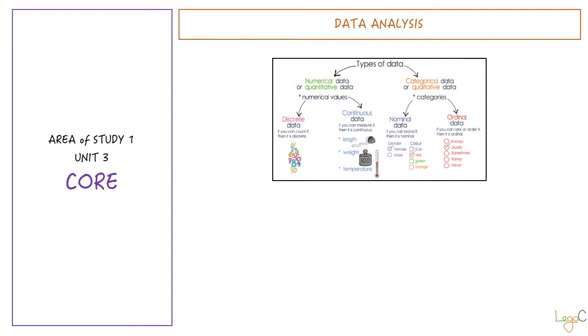First of all, we need to know the types of data that we use. From this diagram, we have two types of data: numerical or quantitative, represented by numerical values, and categorical or qualitative, represented by categories. The numerical variables can be either discrete if they are countable, or continuous if we talk about measurement. The categorical data can be either nominal or ordinal. Nominal is sort of like branding, and ordinal is ranking them or putting them in order.